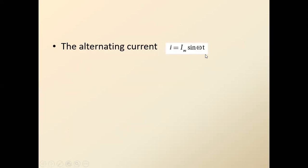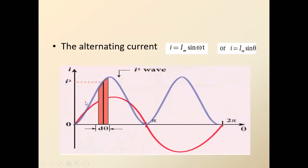The alternating current is given by i = Im·sin(ωt). If we let ωt = θ, then i = Im·sin(θ). This is the instantaneous value of alternating current. The red line on the graph shows the value of the alternating current. The blue dotted line shows i², which is always a positive value — whether you square a positive or negative current, you always get a positive result.